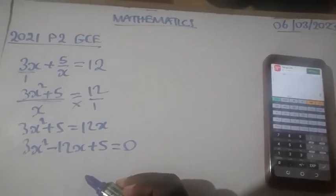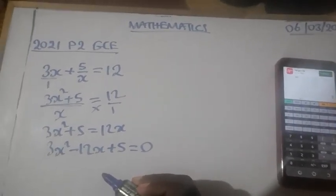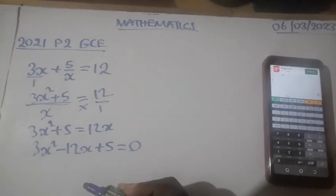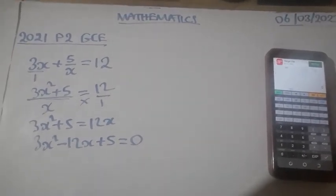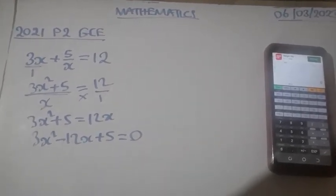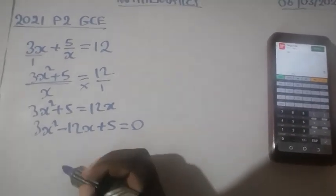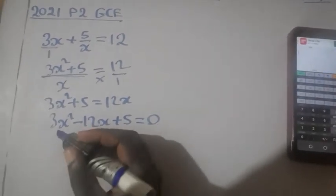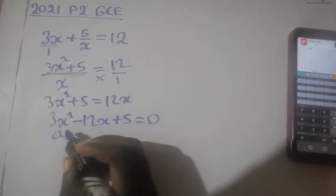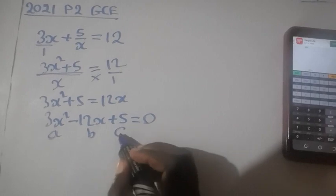Now the equation itself specified that our answer should be left in two decimal places, which means it has no factors. So go direct into formula. So we have A, B, C.